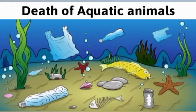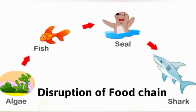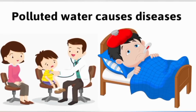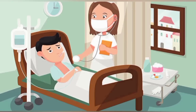Effects of water pollution: the toxic chemicals present in the water are very harmful to the lives of all aquatic animals. Due to water pollution, the food chain continues to be disrupted at all levels, and polluted water can make its way back to households, resulting in people being affected with bacteria and viruses. Drinking polluted water can cause diseases like typhoid, cholera, and diarrhea.